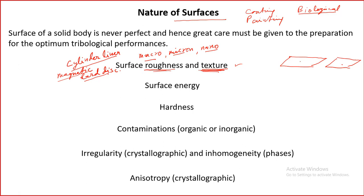It is not always that we go for very smooth surfaces; rather, we want an optimum level of surface roughness and texture. All engineering manufacturing systems will produce certain types of surface features — roughness and texture — and we cannot avoid that. There will always be some sort of feature.